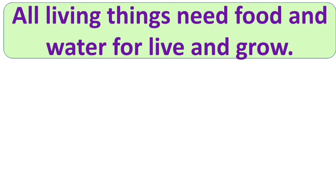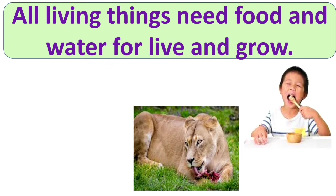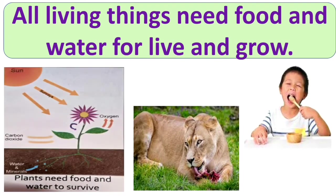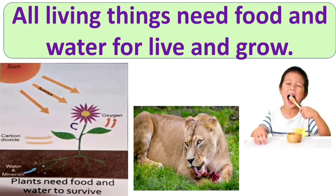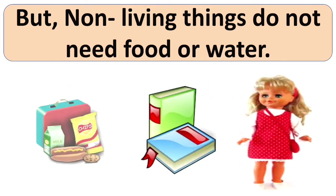All living things need food and water to live and grow. The food that human beings and animals eat comes from plants and other animals. But plants make their own food — they take in water and nutrients from the soil. Non-living things do not need food or water.